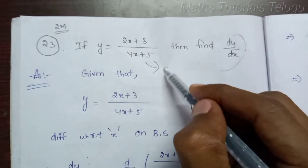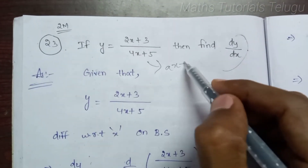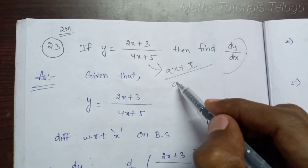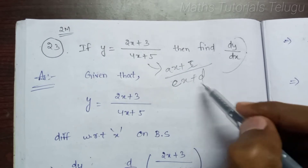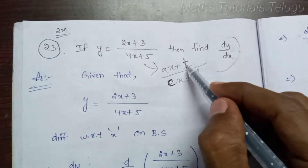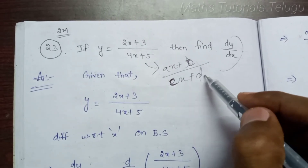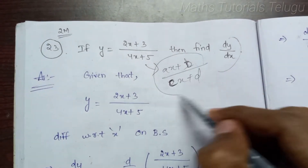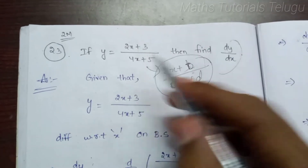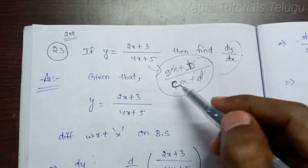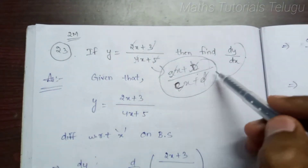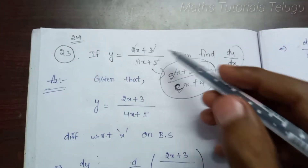So actually we can write this in the general form: (ax + b) divided by (cx + d), where A, B, C, D are constants. Here our constants are 2, 3, 4, 5. So the linear formula is used here.